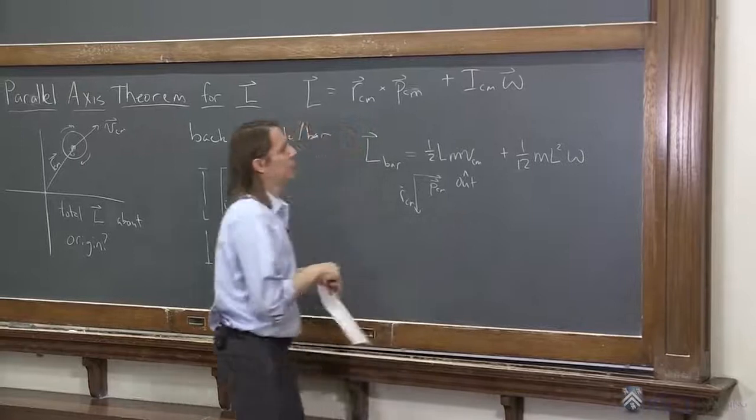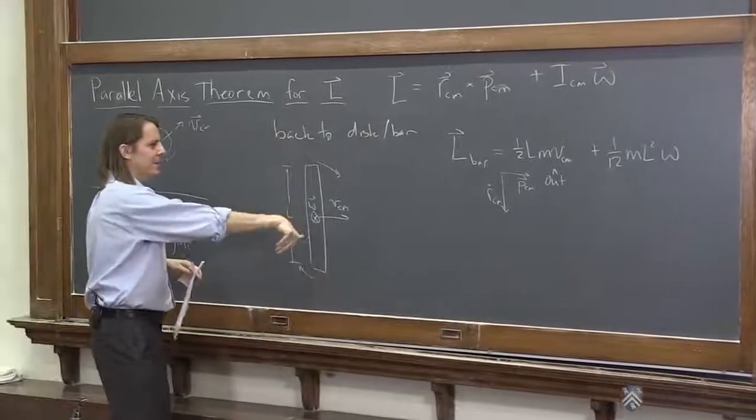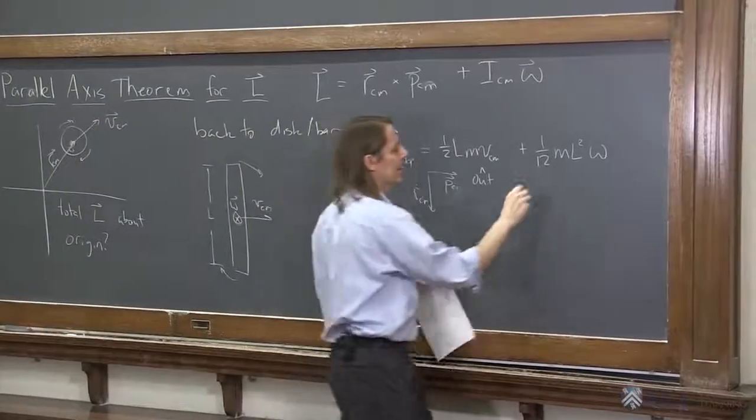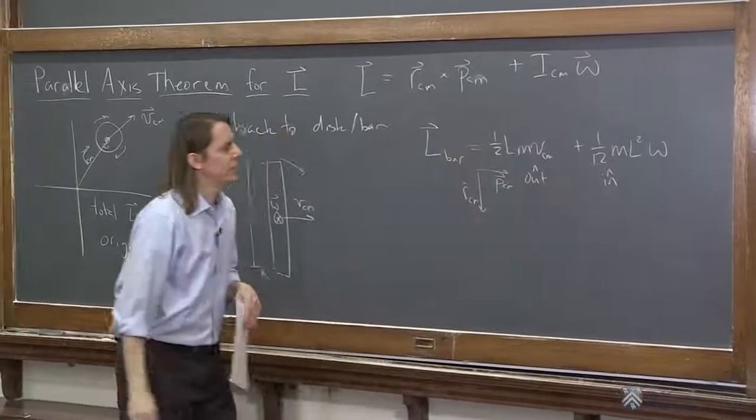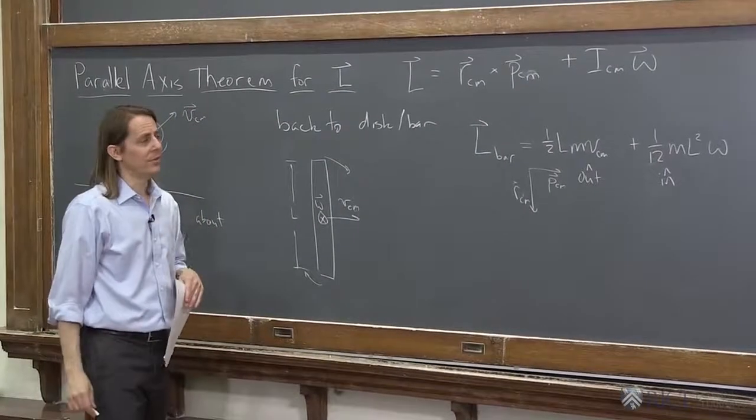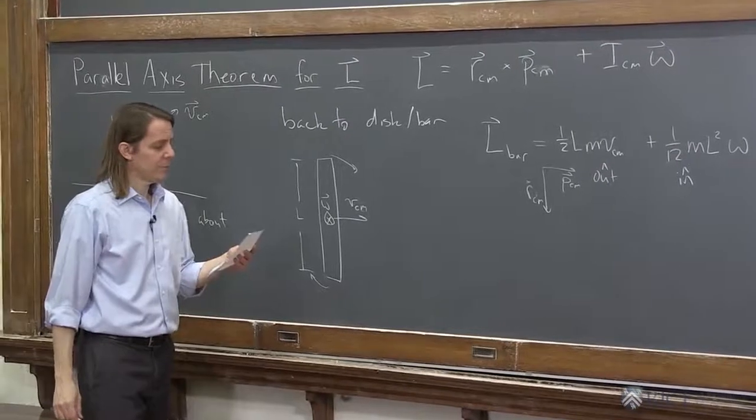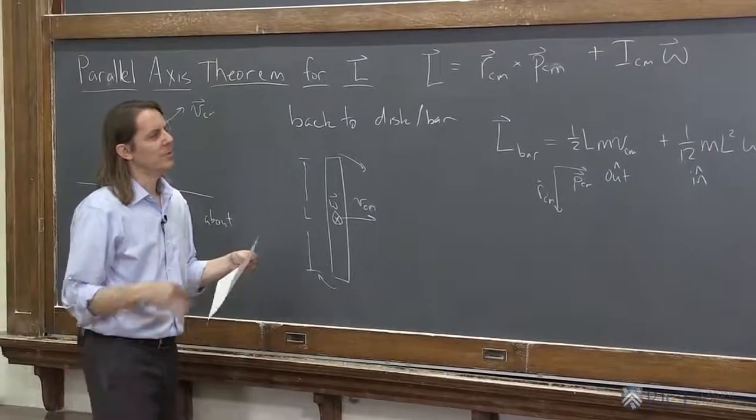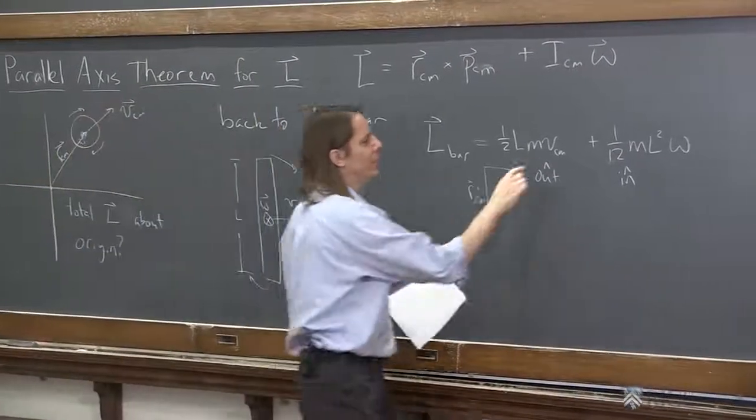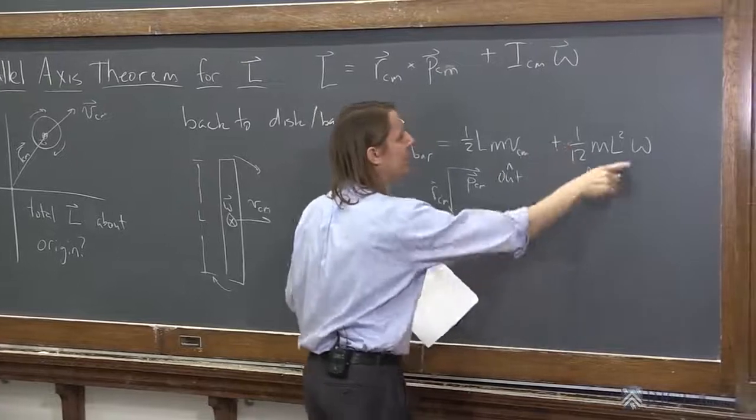All right, and which way is this? Same direction as omega, this is in. Aha! So there's a chance those two are going to cancel. One is out, and one is in. But if we want that to be zero, we have to remember in this specific problem, there's a relationship between the center of mass velocity and omega.